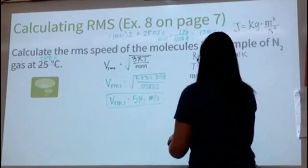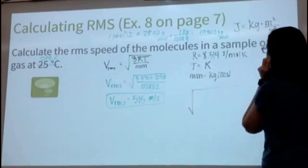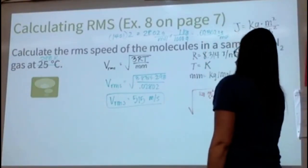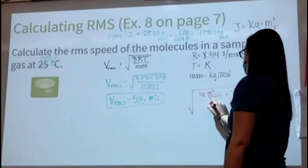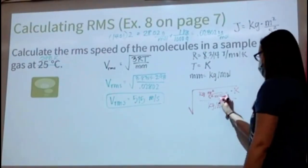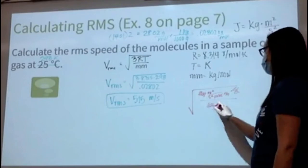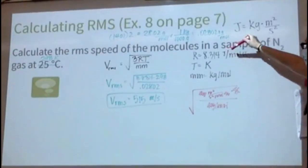Checking units: 8.314 J/(mol·K), where a joule = kg·m²/s². On the bottom: mol·K × K over kg/mol. Moles cancel, Kelvin cancels, kilograms cancel, leaving m²/s² inside the square root — which gives meters per second. That's why all units must be in J/(mol·K) and kg/mol with Kelvin.